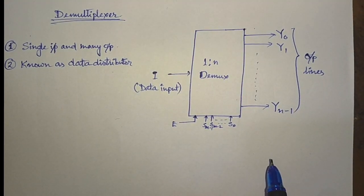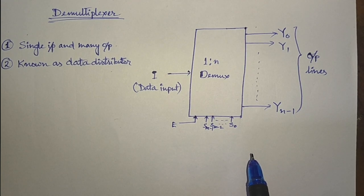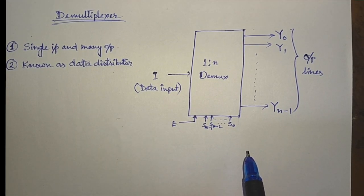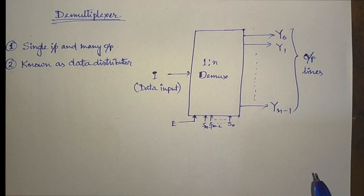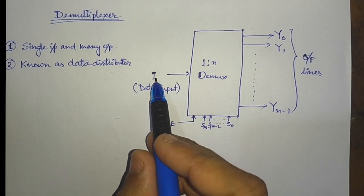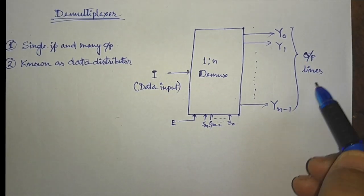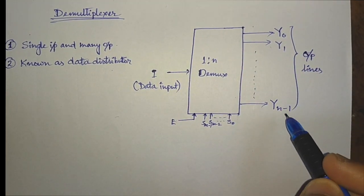A demultiplexer is a digital circuit — a combinational logic circuit — that performs the inverse operation of a multiplexer. In the last tutorial, we saw that a multiplexer performs the operation of a data selector, having n number of input lines and one output line. Here we have the inverse: one data input line denoted by i, and n number of output data lines.